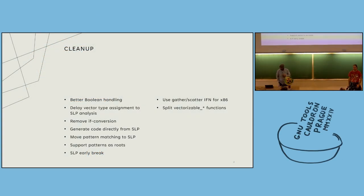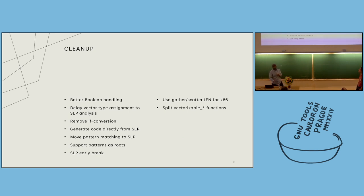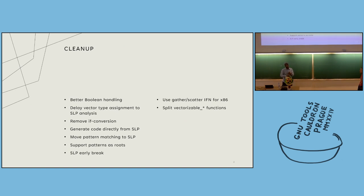I have essentially two summary slides for topics, and if anyone has any questions I can go into detail about any of them. They're divided into two categories: first are things that are cleanups, and the next are new features. One thing we need to clean up is how we do boolean handling at the moment. Once we added early break vectorization, we fail to vectorize a lot of times because the vectorizer can't vectorize the boolean condition.